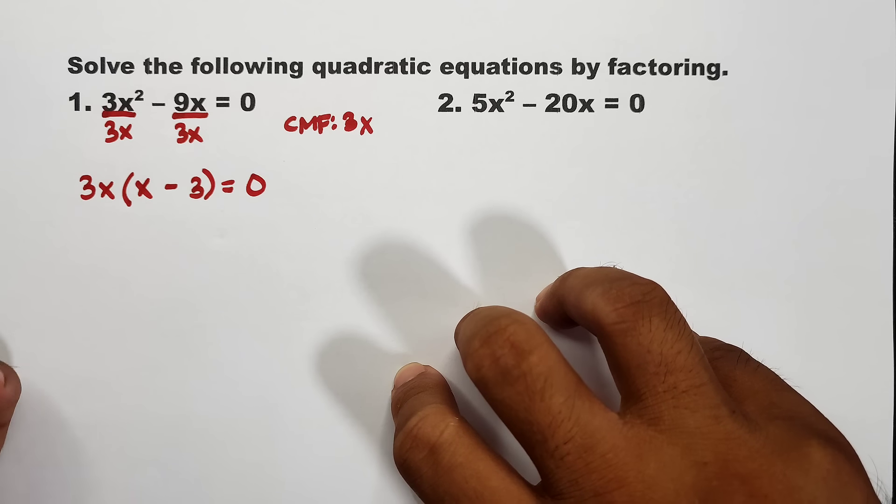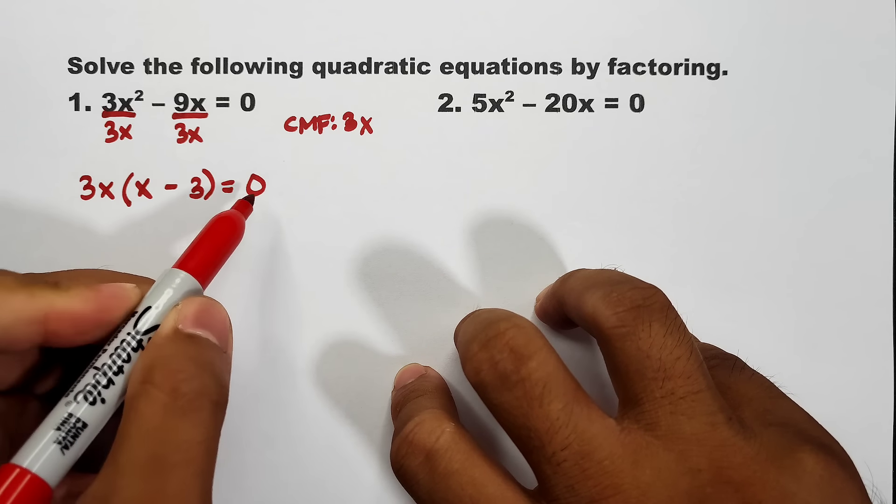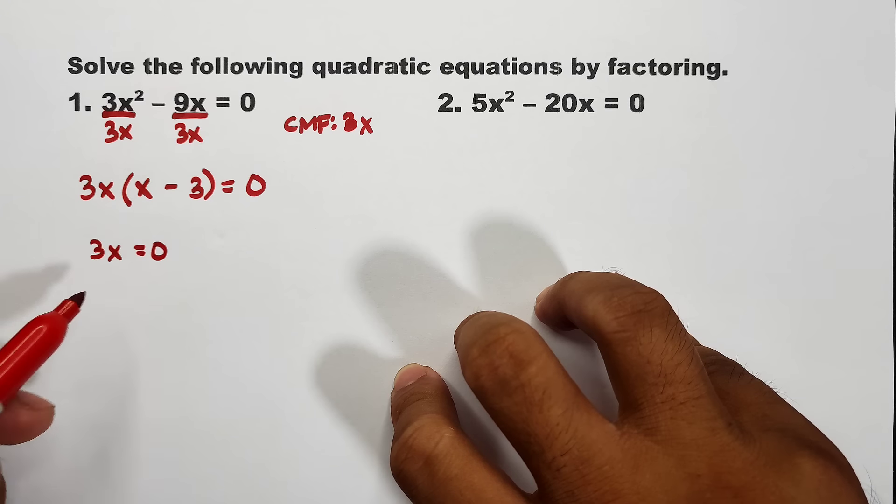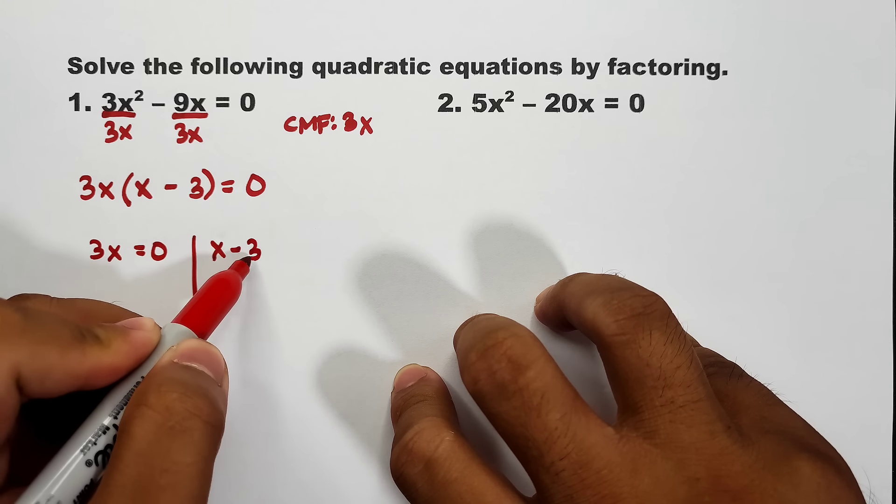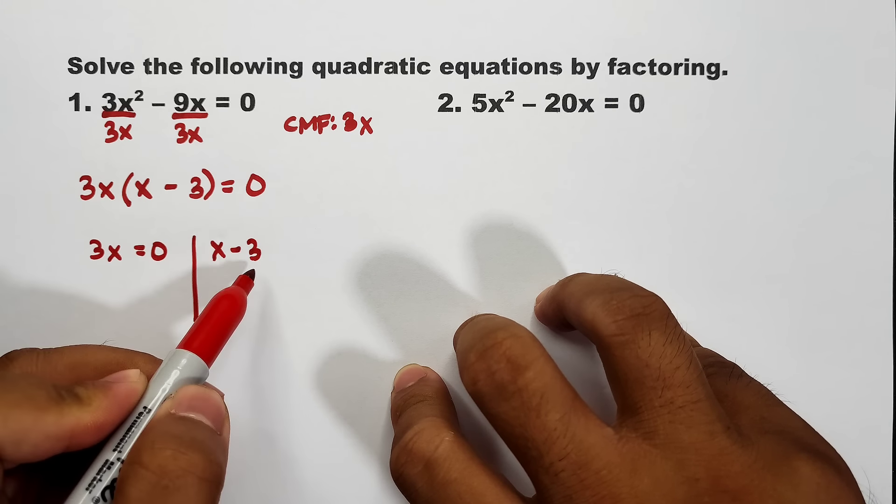After factoring, we equate each factor to 0. The first factor: 3x = 0 — divide both sides by 3, giving x = 0. The second factor: x - 3 = 0 — transpose to get x = 3. So the solutions of the first equation are x = 0 and x = 3.